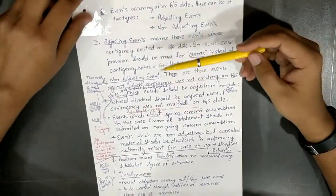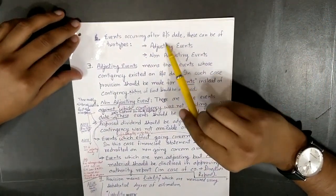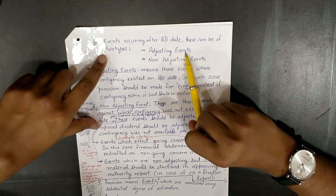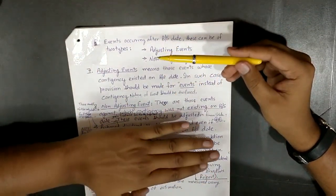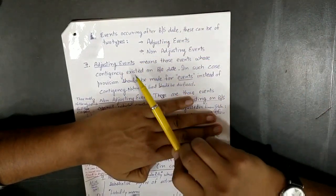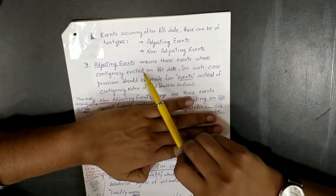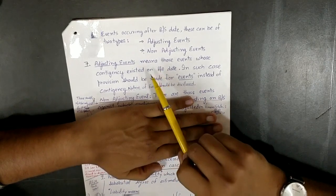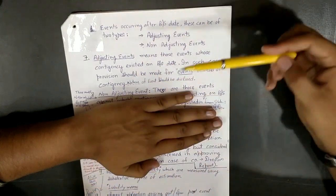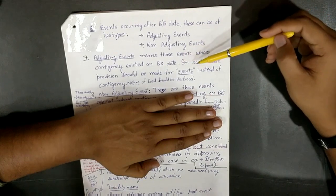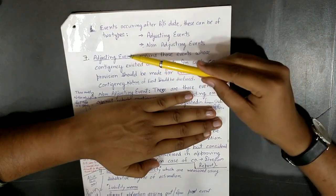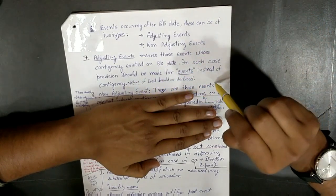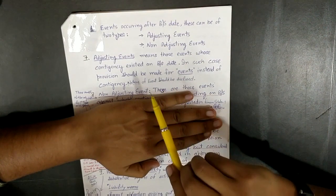Point number 6: Events occurring after balance sheet date. These can be of two types: adjusting and non-adjusting. Adjusting event means those events whose contingency existed on balance sheet date. In such a case, provision should be made for event instead of contingency. Nature of event should be disclosed.